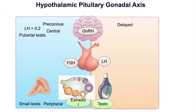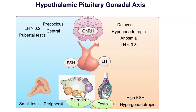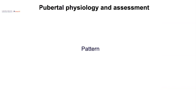Delayed puberty due to hypothalamic-pituitary-gonadal disorder is characterized by a basal LH level less than 0.1 mIU/mL, and in some cases may be associated with anosmia. Whereas delayed puberty due to gonadal disorder is associated with high FSH levels, known as hypergonadotropic hypogonadism. Hypergonadotropic hypogonadism is associated with small testes.